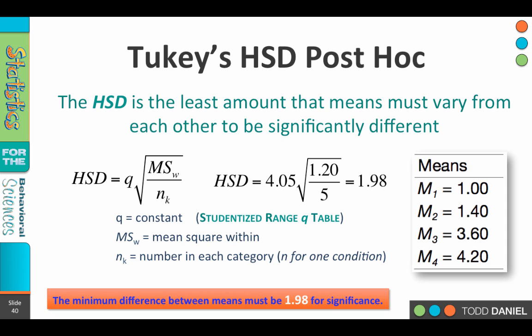Now this means that in order to use the HSD, we should have an equal number of participants in each of the groups — that's the assumption. If that's not the case, we'll have to use a different type of post-hoc test.